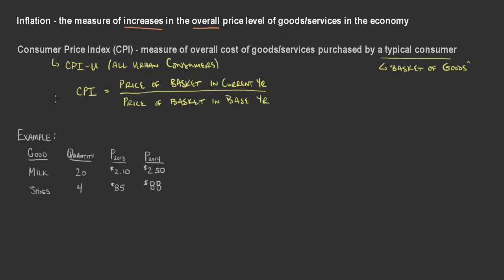I've added a simplified example here to consider how the consumer price index is really calculated and what we really mean by the basket of goods. So let's consider that we just are going to define a basket of goods as two goods — only two goods: milk and shoes. We have to define the quantity of that basket, which we've defined as 20 gallons of milk and four pairs of shoes. This quantity is typically set based off the base year, and we'll get into that further when discussing the details of specific CPI, but we want to go through and actually calculate it.